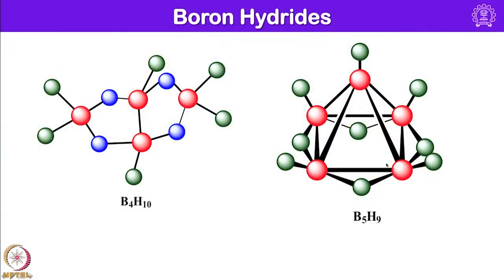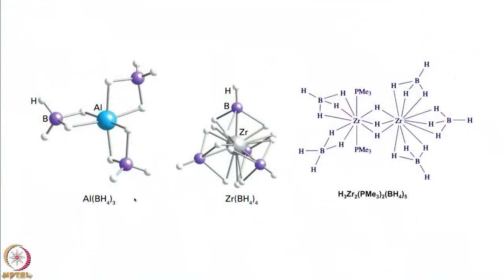Some structures are shown here — B4H10 and B5H9 — they are all derived from regular polyhedra. When I describe Wade's rules for depicting the structure of boron hydrides, I will elaborate more on these aspects and show all kinds of polyhedra and how to derive boron hydride structures starting from regular polyhedra. These are a couple of examples of homoleptic boron hydride compounds.